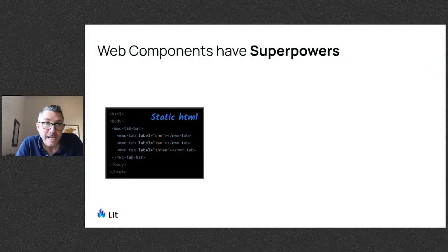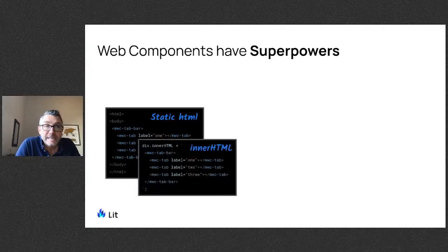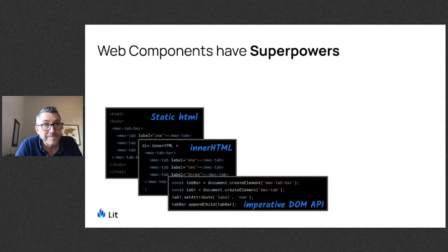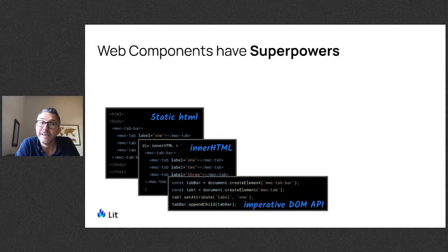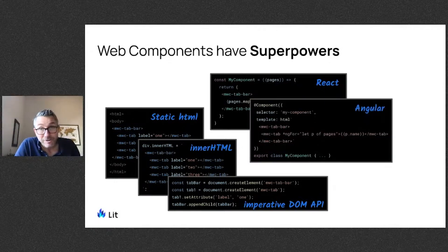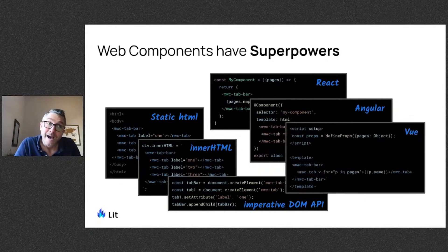The superpower comes from the fact that they can be instantiated just like any other HTML element. You can use them in static HTML markup, or use any of the built-in DOM APIs to create new instances of them, like innerHTML or the imperative DOM APIs like document.createElement. Since any framework that creates DOM has to use one of these APIs, any framework can automatically create Web Components. This is why you can use Web Components like LIT in React, Angular, Vue templates, and just about any framework out there.